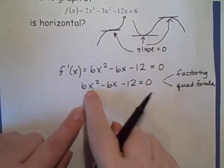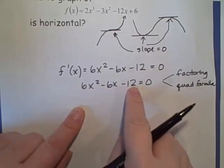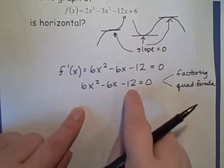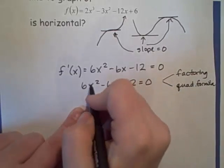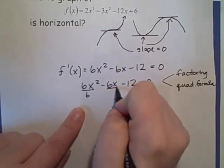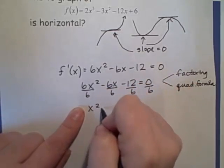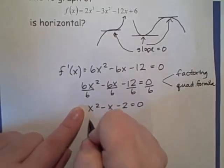And the one thing that sort of makes this a little bit challenging to factor is how the numbers are so big. But I'm also noticing that each term has a factor of 6. So since I have an equation, I can just divide everything by 6. And I have x squared minus x minus 2 equals zero.